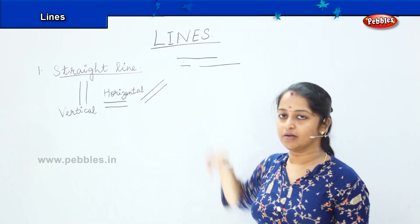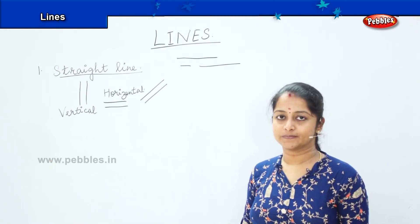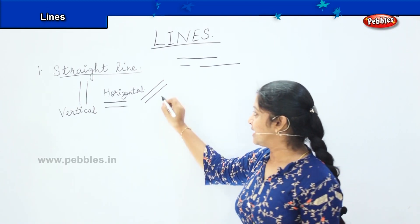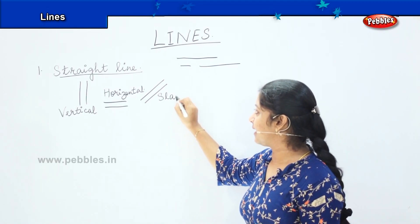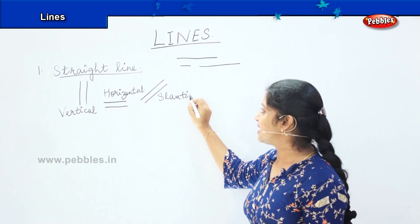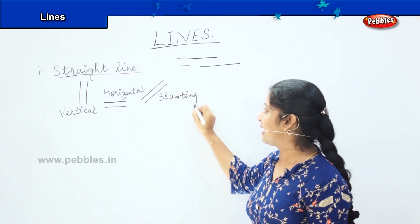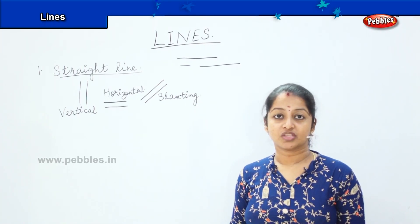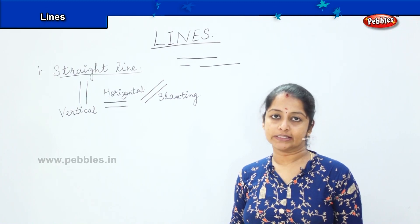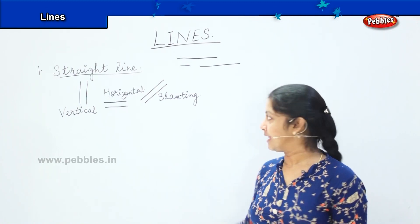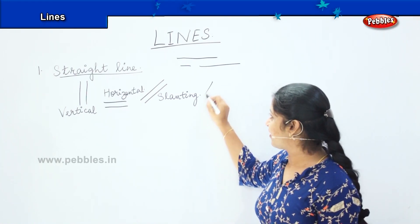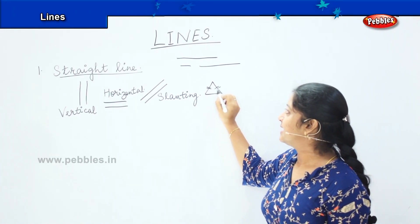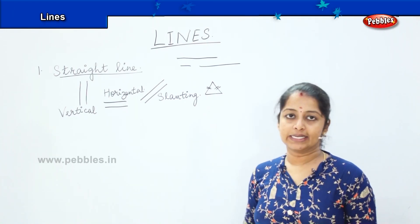What is this type of line called? This is called a slanting line. Where can you see a slanting line in real life? The roof, the triangle — whatever is there in the form of a triangle. This is called a slanting line.